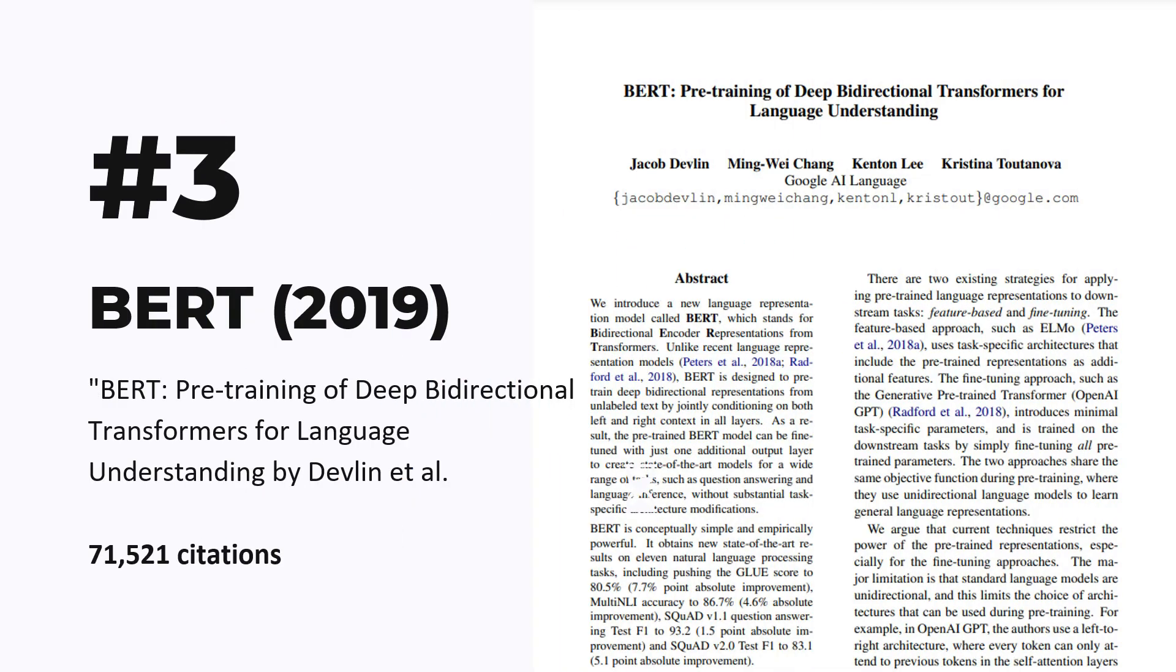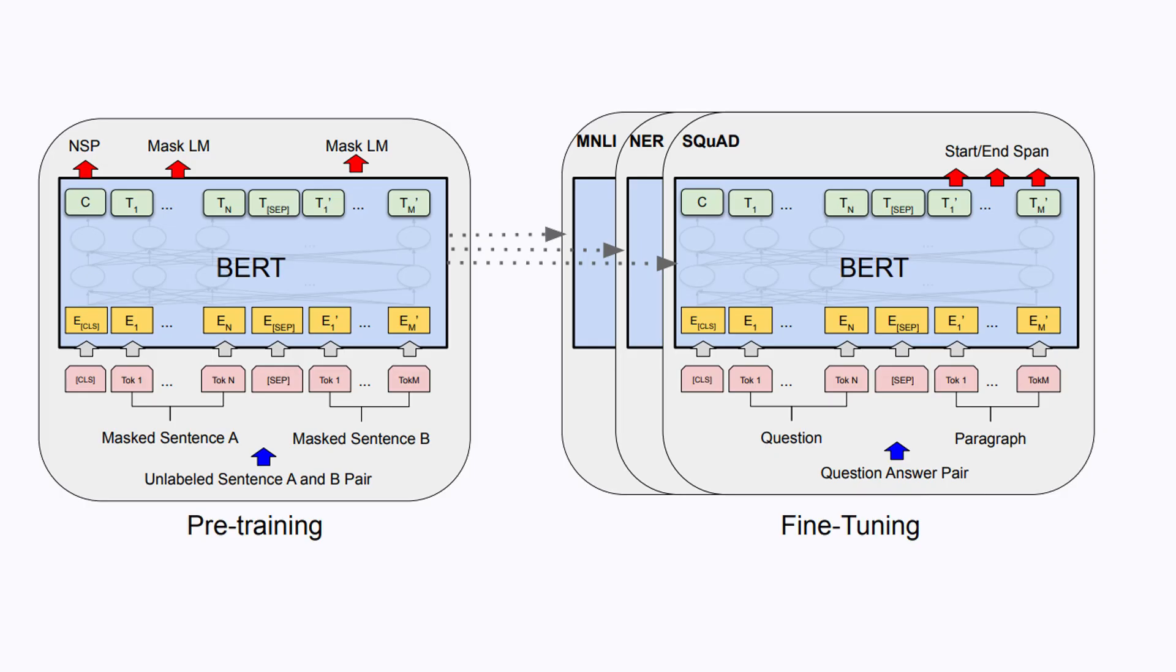Number three on the list is BERT, which was published in 2019. The BERT model introduced the concept of pre-training followed by fine-tuning. What this means is during the pre-training phase, the model learns on a large amount of unlabeled text, so you can find a lot of data on the internet that the model can learn from.